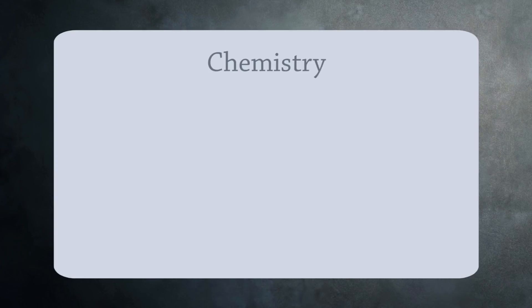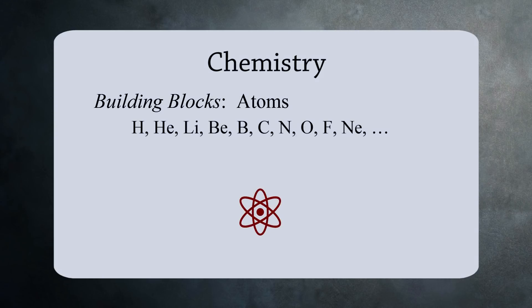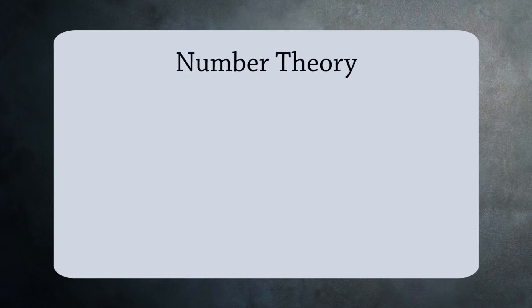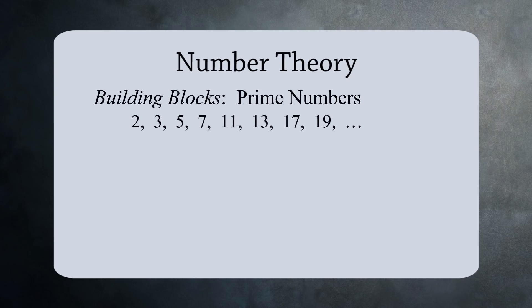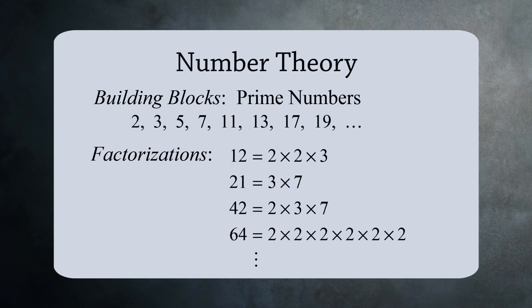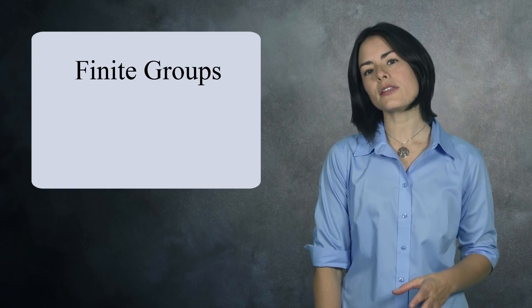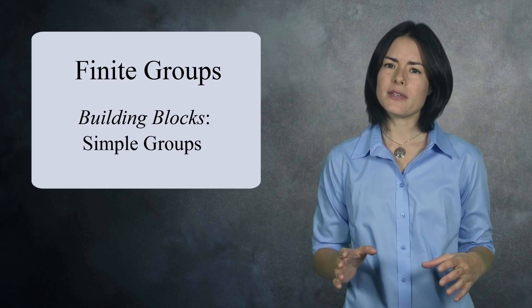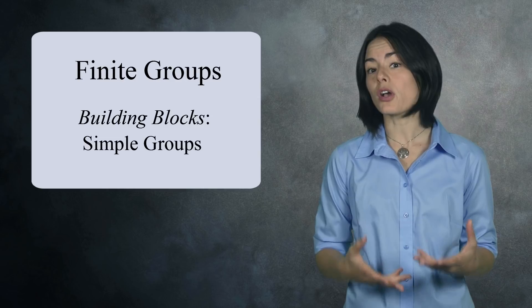A recurring theme in science and mathematics is to find the fundamental building blocks of something, then study the different ways you can put them together. For example, in chemistry the building blocks of everyday matter are atoms, and there are different types of bonds which describe how they can be stuck together to make molecules. In number theory, the building blocks of integers are prime numbers, and every positive whole number has a unique factorization into primes. In group theory, the fundamental building blocks of finite groups are called simple groups, and there are many ways you can piece them together to make larger, more complex groups.